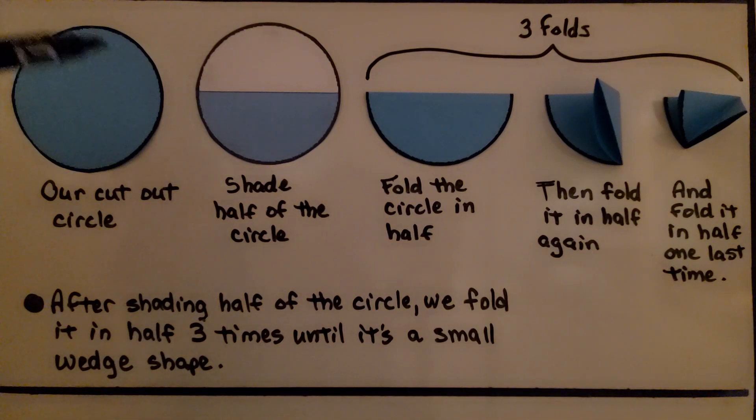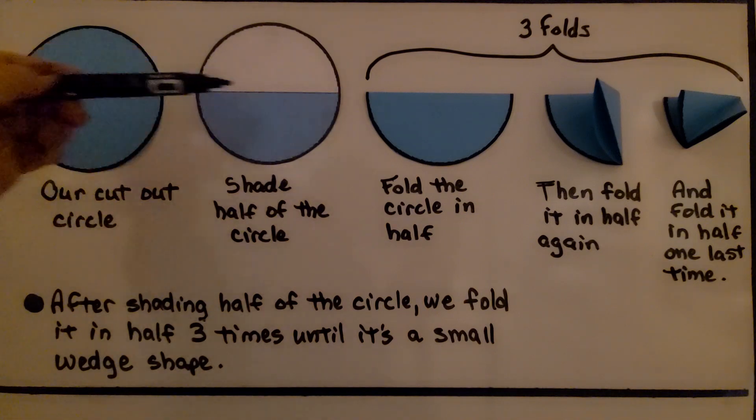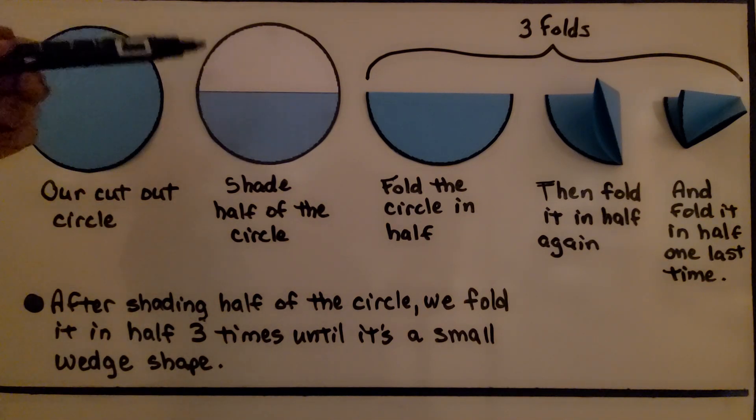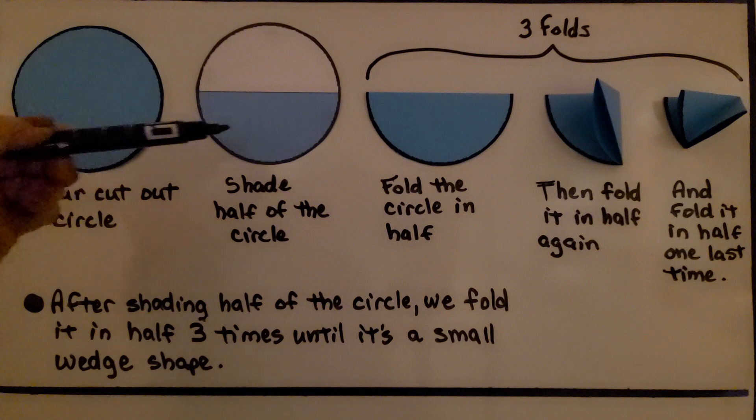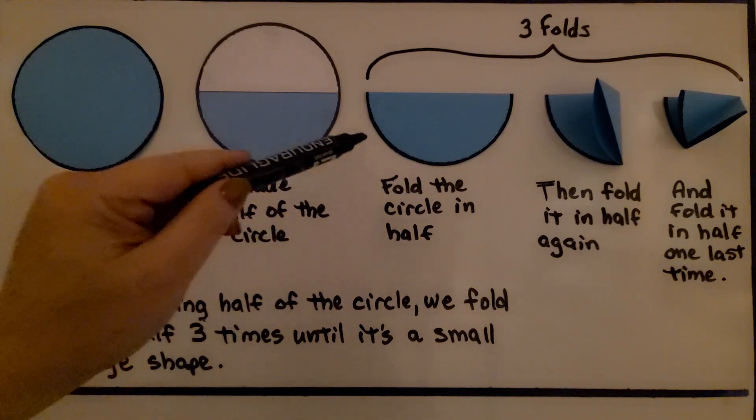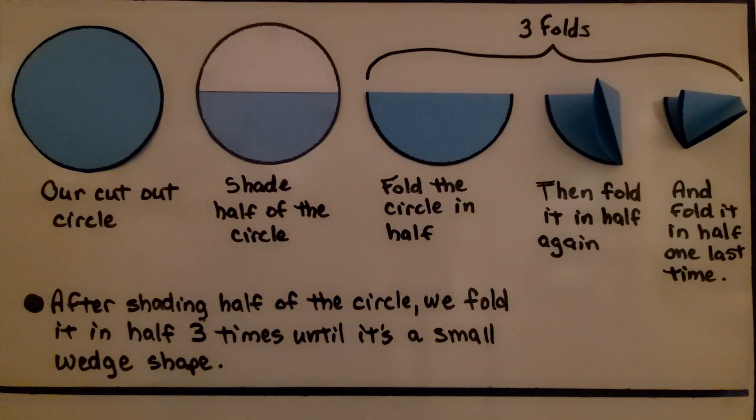After we make our circle, we cut it out and we shade half the circle. It doesn't matter if you shade the top or the bottom, as long as you shade half of the circle. Then we fold the circle in half.